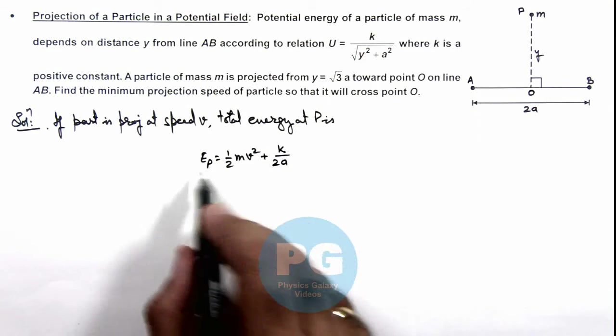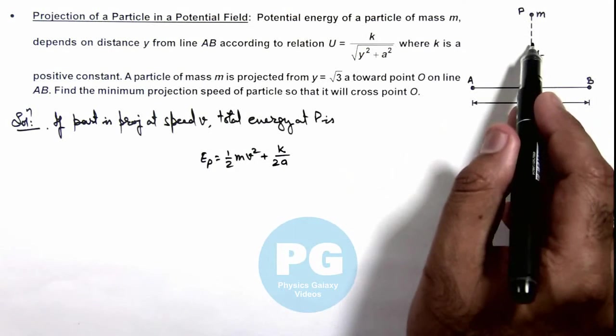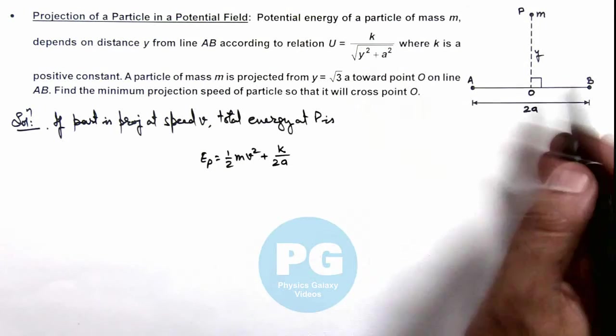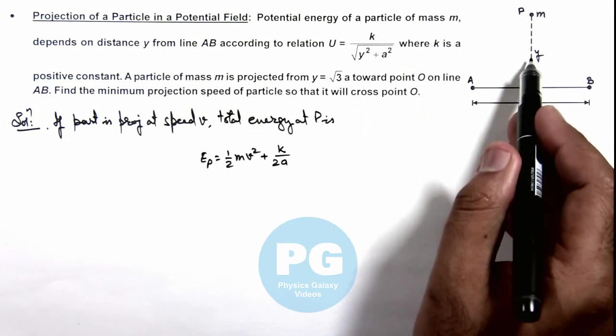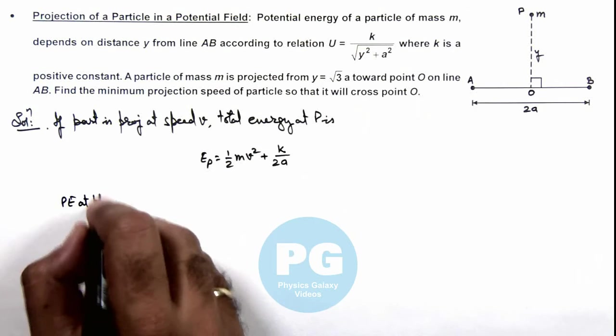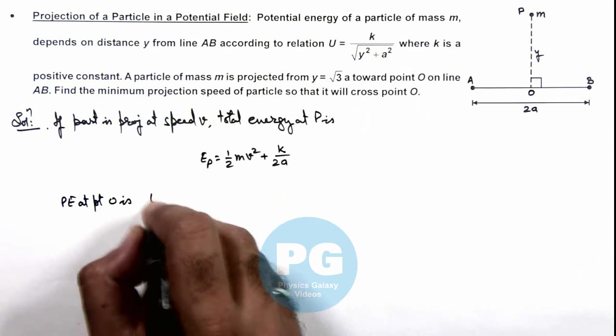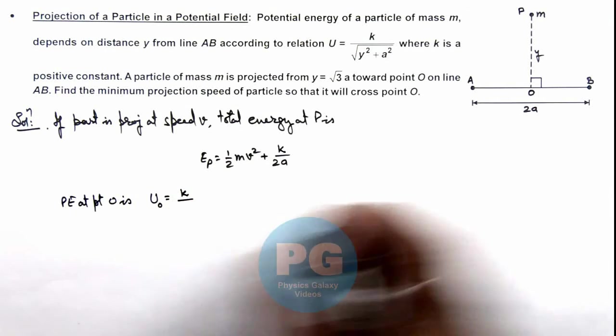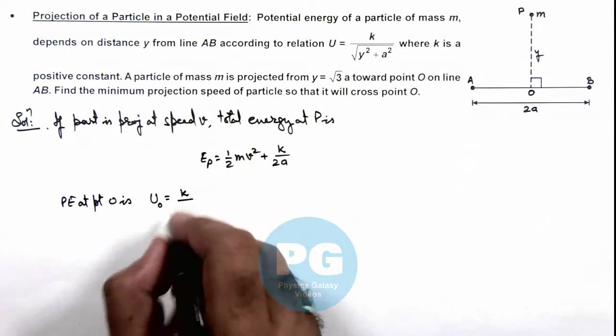Now with this energy, when the particle is projected, as it is reaching toward point O, its potential energy is increasing, so its kinetic energy will decrease. Here we can write the potential energy at point O. This can be written as U_O, which is equal to k by a, since y equals zero here.